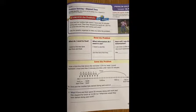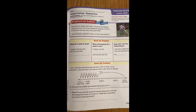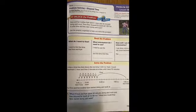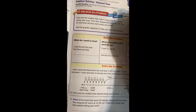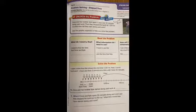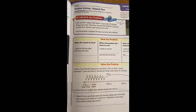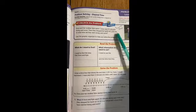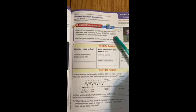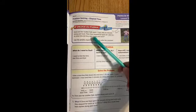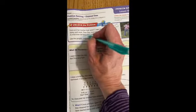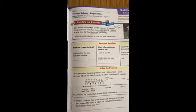Taking a look at Unlock the Problem Real World: Dora and her brother Kyle spent one hour and 35 minutes doing yard work. That is an example of the elapsed time — how much time went by while they were doing the yard work. Then they stopped for lunch at 1:20 PM. At what time did they start doing yard work? Here we know the elapsed time — 1 hour and 35 minutes — and we know the end time.